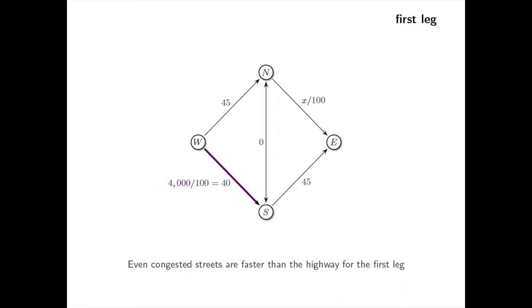On the other hand, the highway always takes 45 minutes to reach the same place. Hence, the streets are always faster. By similar reasoning, drivers will never choose the highway for the second leg. All 4,000 drivers will follow the same route. They will spend 40 minutes on each leg and the total travel time will be 80 minutes.